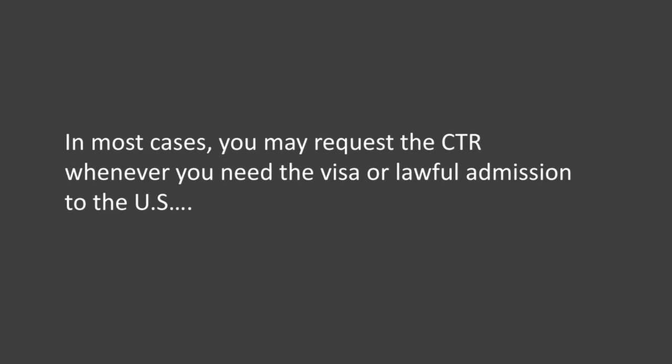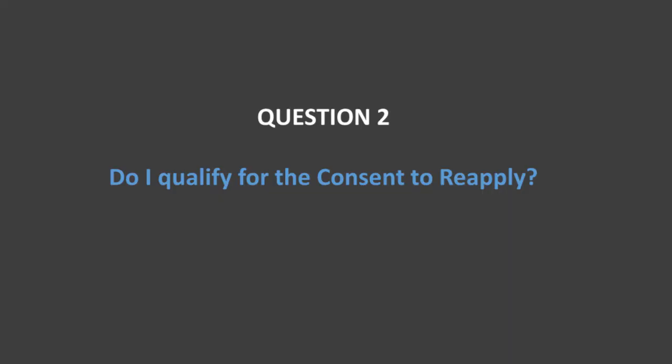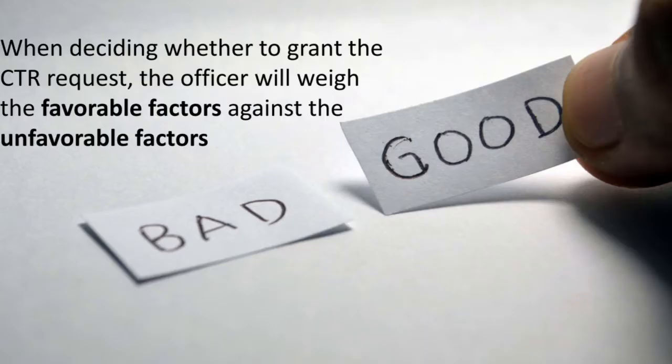In most cases, you may request a CTR whenever you need the visa or lawful admission. But if you seek to immigrate to the US — that is, become a permanent resident — and have an I-212 bar, you must wait abroad for at least 10 years before you may file for the CTR. A 9C-1 bar is when you have an illegal re-entry or attempted illegal re-entry after accruing more than one year of unlawful presence. A 9C-2 bar is when you have an illegal re-entry or attempted illegal re-entry after being issued a removal order.